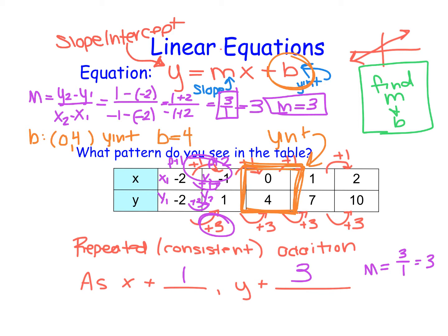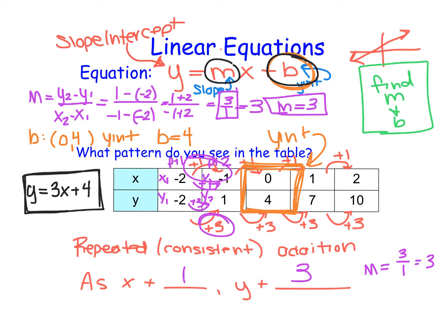So now I can not only find out if my table is linear, exponential, or quadratic, but I can write an equation for it. Using y equals mx plus b, I replace m and b with the values I know: y equals 3x plus 4. Not only have I determined the type by looking at the table, but I've also written an equation to model this data.